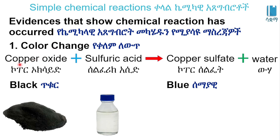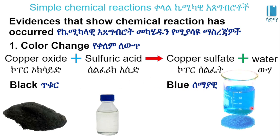For example, copper oxide reacts with sulfuric acid. Copper oxide plus sulfuric acid produces copper sulfate. This is an example of a chemical reaction.